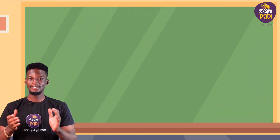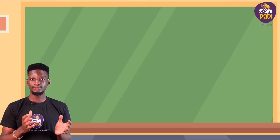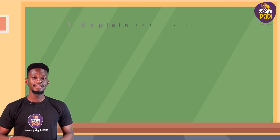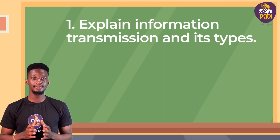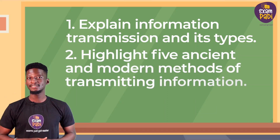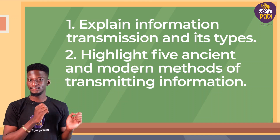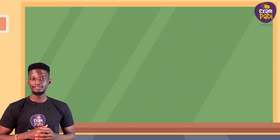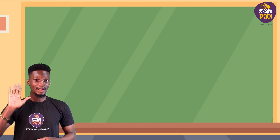We've come to the end of this lesson. Attempt these questions to evaluate yourself. Number one: explain information transmission and its types. Number two: highlight five ancient and modern methods of transmitting information. Thank you for learning about information transmission with me. I'll see you in our next lesson. Bye!